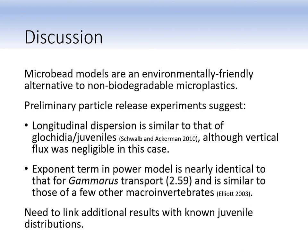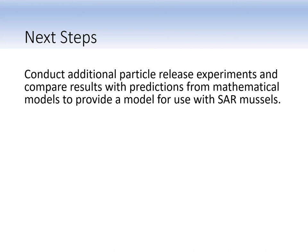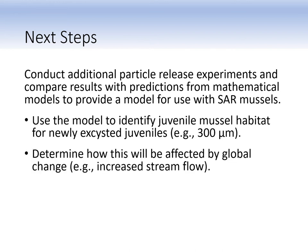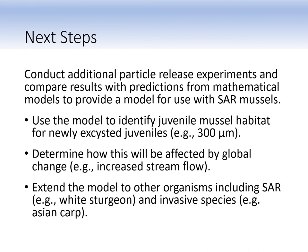We confirmed the microbeads are an acceptable environmentally friendly alternative to non-biodegradable microplastics. Our preliminary data suggests that the decline in microbead capture with downstream distance is similar to that expected for glochidia and juveniles. We need to link additional results with those of known juvenile distributions. Our next steps are to conduct additional particle release experiments and compare our results with predictions from mathematical models in order to develop a model for species at risk mussels. We intend to use that model to identify juvenile mussel habitat, model how processes like increased stream flow affect transport and settlement, and extend the model to other taxa like other species at risk and invasive species, such as white sturgeon and Asian carp.